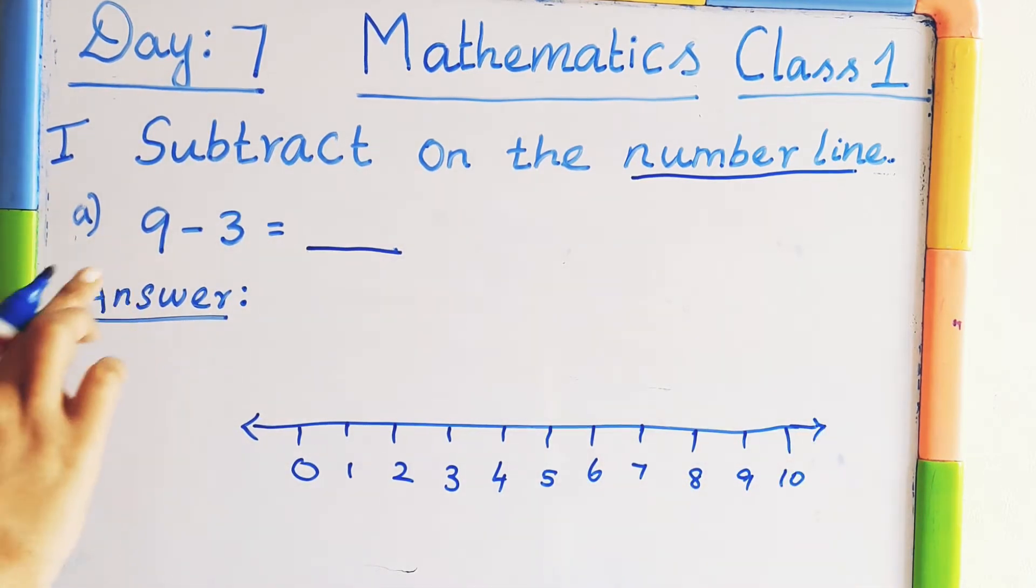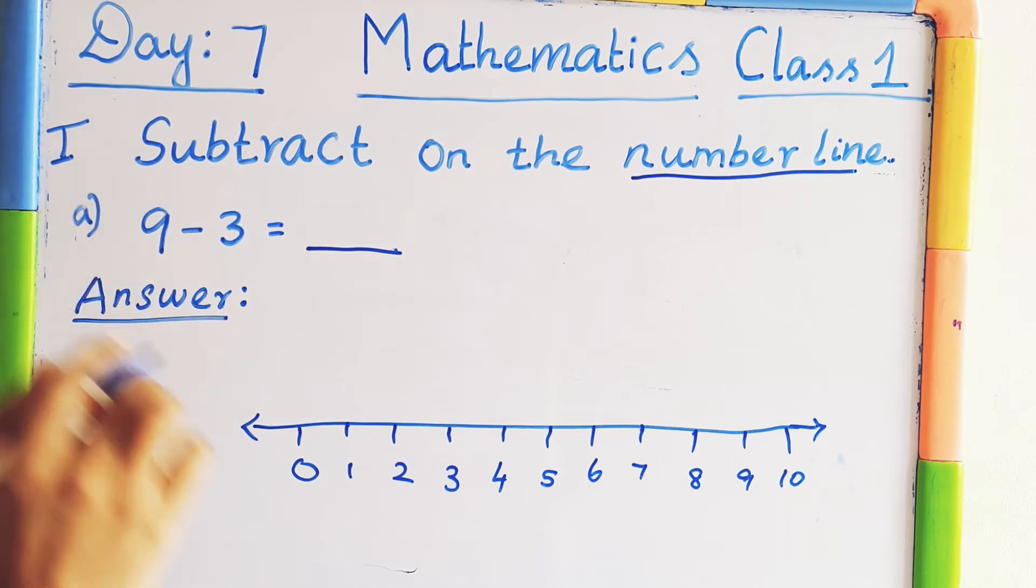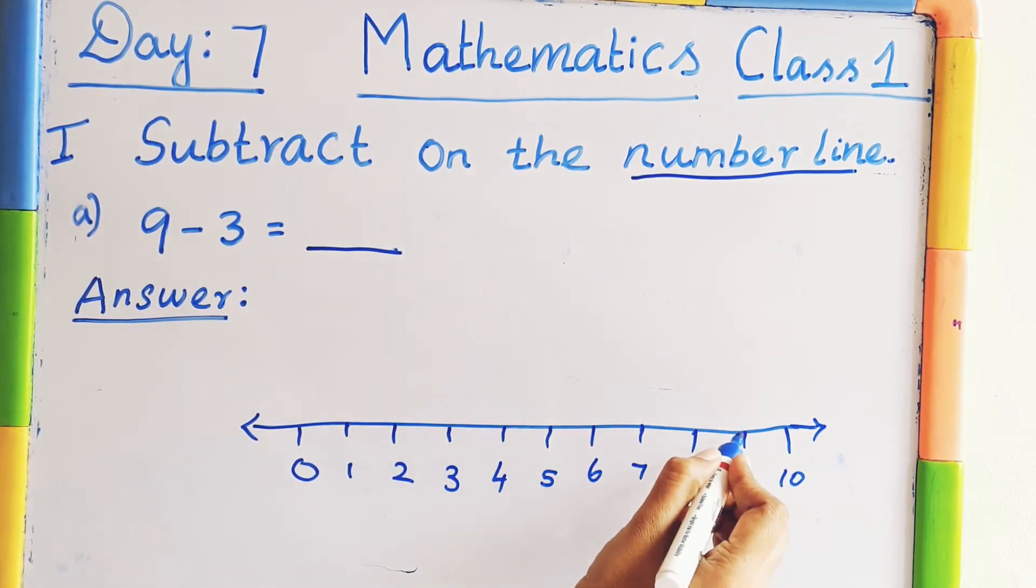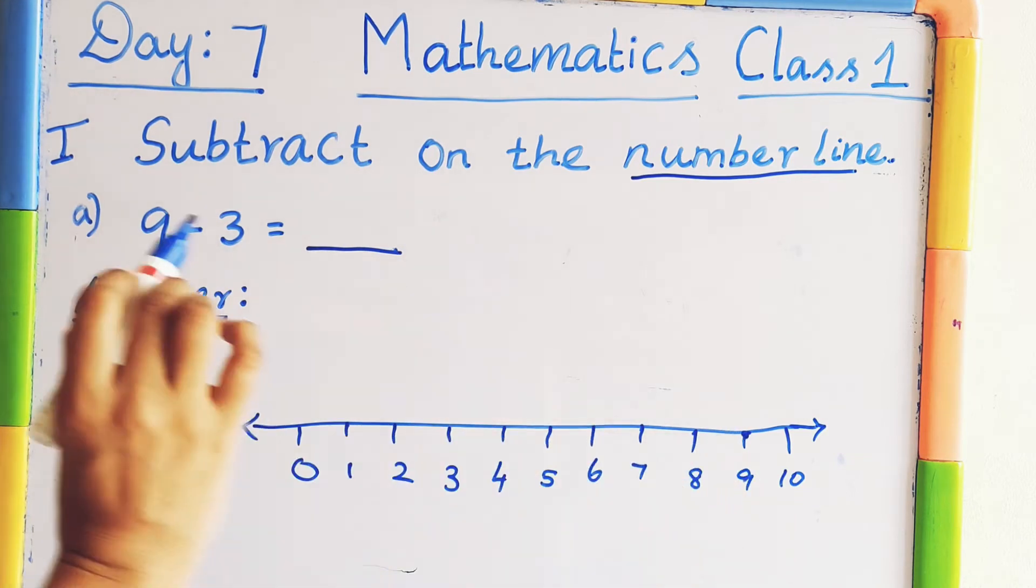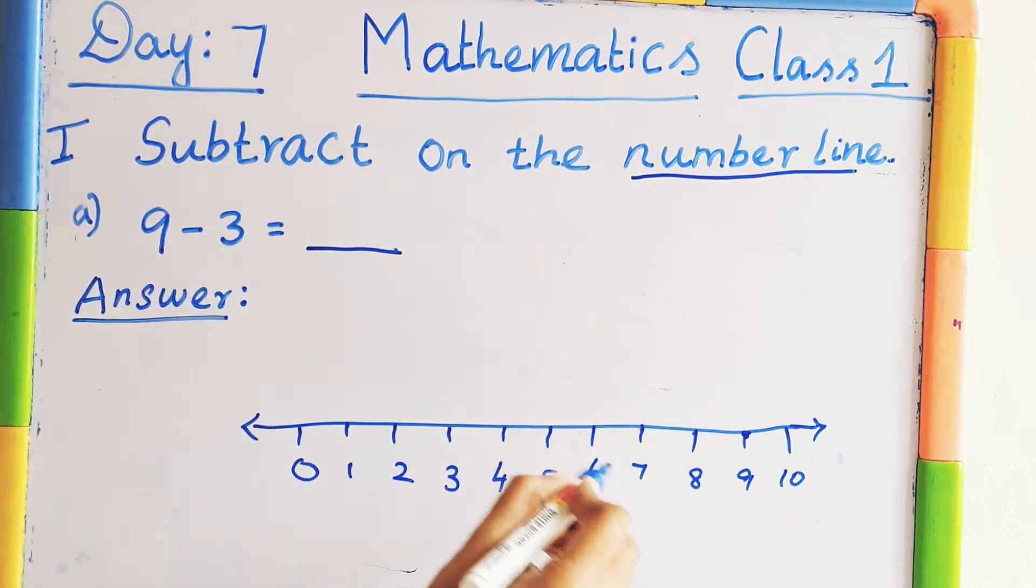Now see the question 9 minus 3 equal to dash. The first number is 9. So find out where is 9 here. Here 9. Mark the 9 here. Then see the second number 3. So we have to draw 3 curves backward.